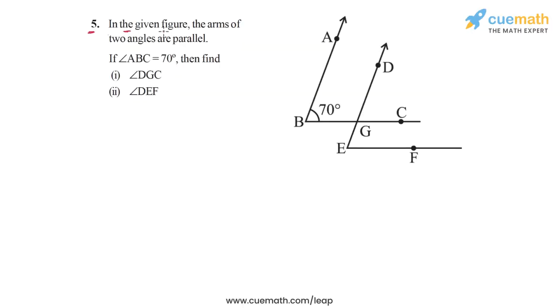Question 5 says that in the given figure on the right side, the arms of the two angles are parallel. So this basically means that if you look at the two angles B and E, the arms are parallel. So BA is parallel to ED and BC is parallel to EF.